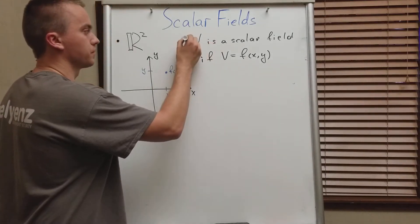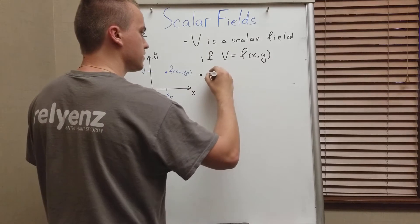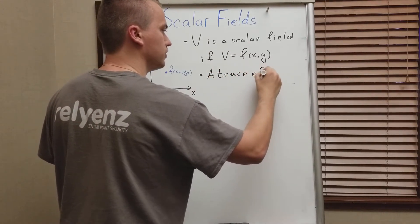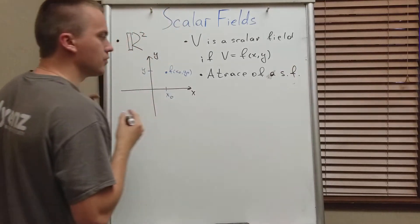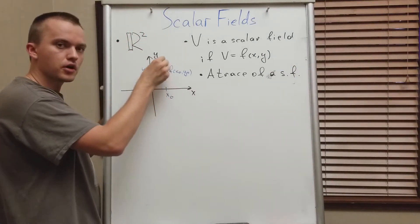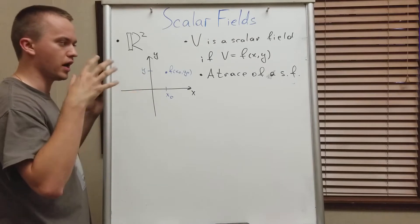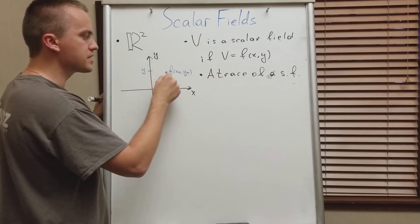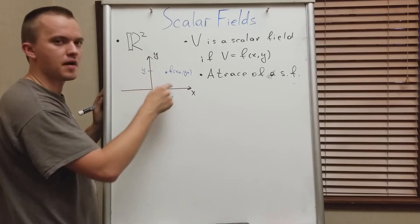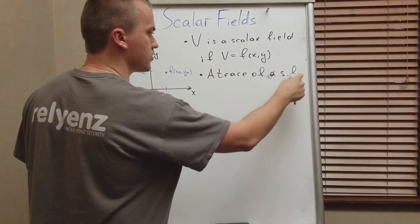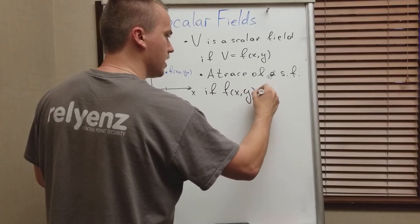This is the definition of the scalar field. The other definition I want to give you is a trace — a trace of a scalar field. What is a trace of a scalar field? The trace is a path in 2D. I'm talking about a scalar field in 2D, but you can define a scalar field in 1D, 3D, or go to higher dimensions. Basically, traces are the path in our domain such that the value of the function along this path is going to be constant. So we're saying that we have a trace of a scalar function if f of x, y equals some constant.